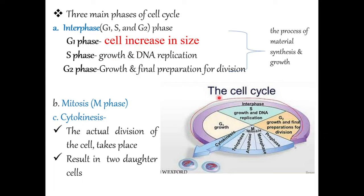In G1 phase, the cell may increase in size. In S phase or synthesis phase, there will be growth and DNA replication takes place. In G2 phase, there will be growth and final preparation of the cell for division. Generally, interphase is the stage at which the process of material synthesis and growth takes place, and at G2 phase, the cell prepares for division.